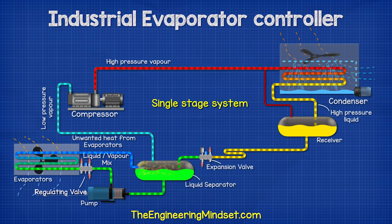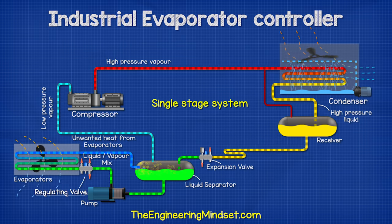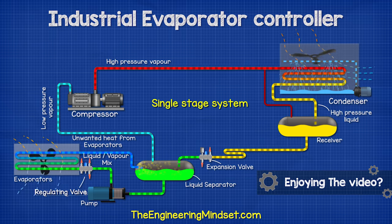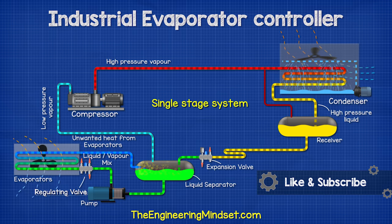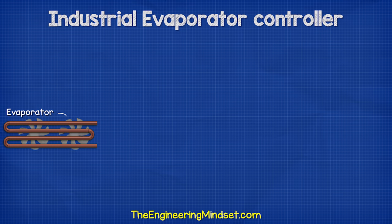Looking at a single-stage system — the simplest industrial refrigeration system — we can see various components such as the compressor, condenser, receiver, liquid separator, and the evaporator. We're going to focus on the evaporator section in particular. Here we have a more detailed version of the evaporator circuit. We have the evaporator and the fans, which blow the ambient air across the heat exchanger of the evaporator.